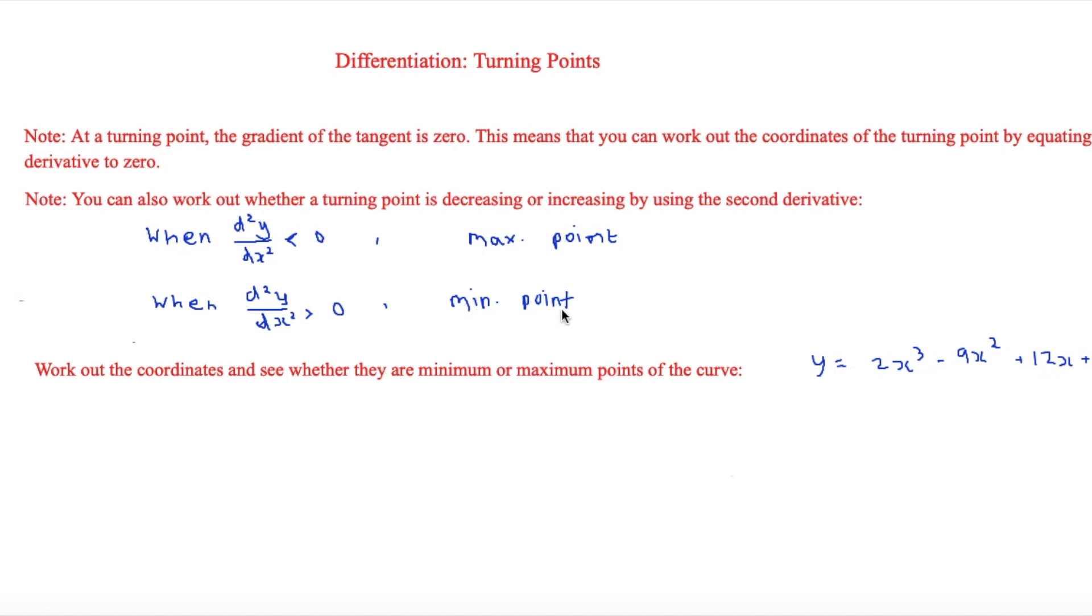This is I'm Stark and in this video we are looking at differentiation and turning points. There's two main things that we need to know for this. The first one is that at a turning point the gradient of the tangent is zero. This means that you can work out the coordinates of the turning point by equating the derivative to zero.